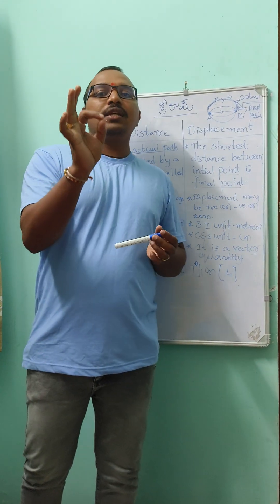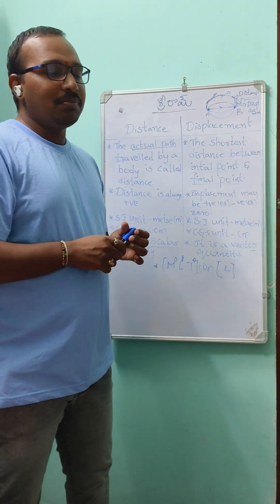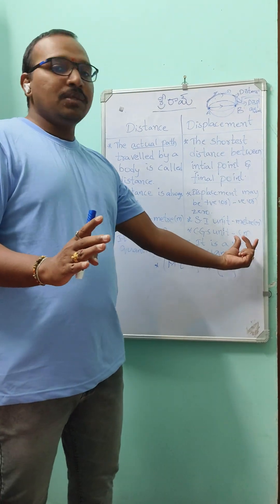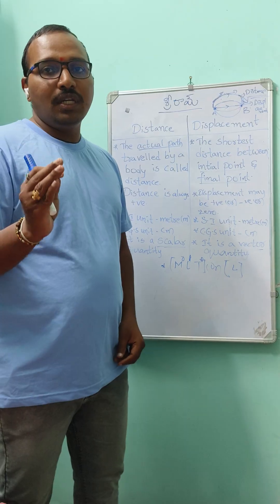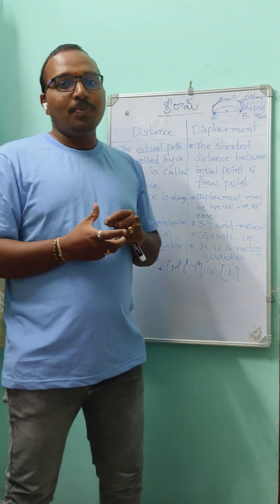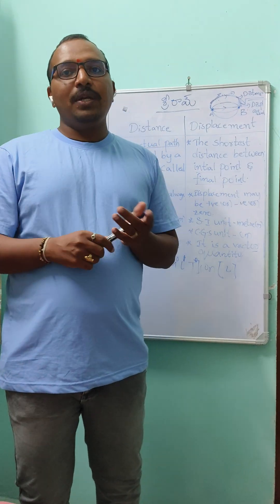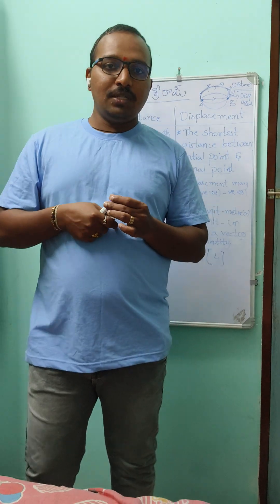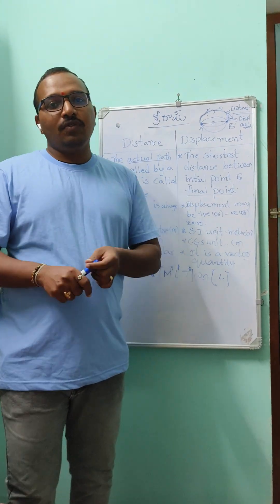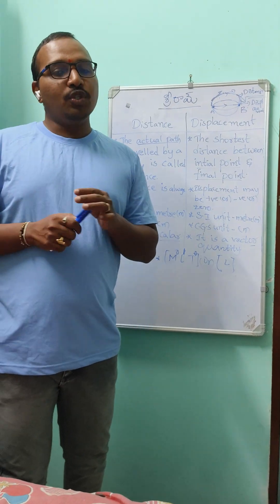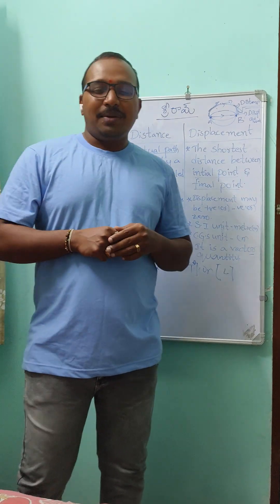The most important difference: distance is a scalar quantity because there is no particular direction, while displacement is a vector quantity. In the next video, we will see distance and displacement in a circular path and how to use the Pythagorean theorem to find displacement. Please like and subscribe — it motivates me to make more videos on class-level motion and straight-line topics. Thank you.